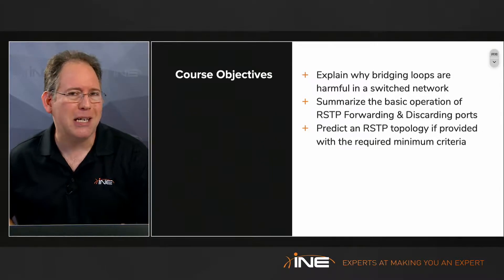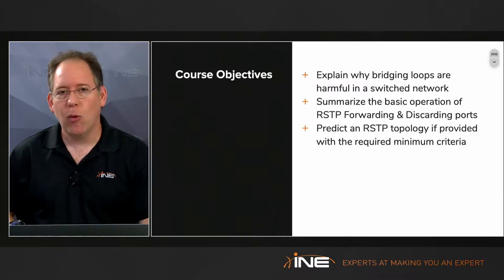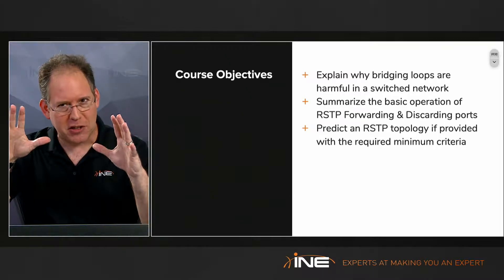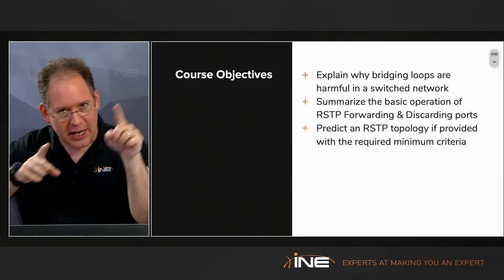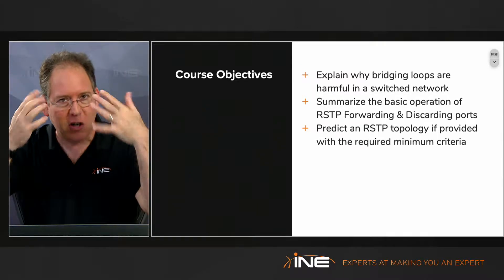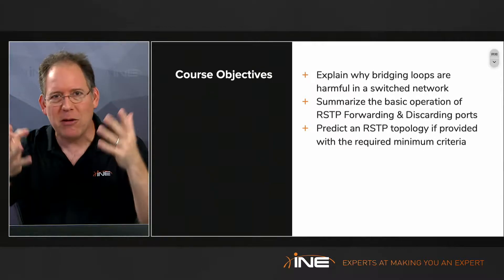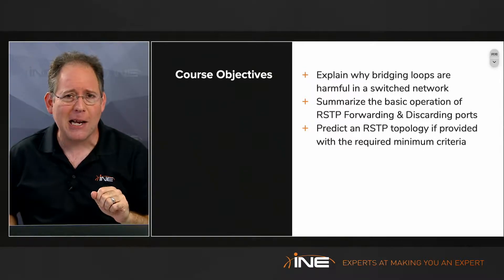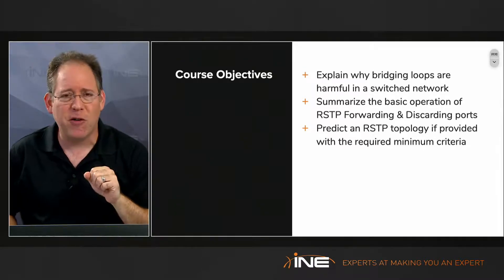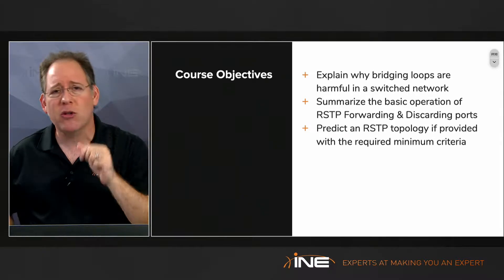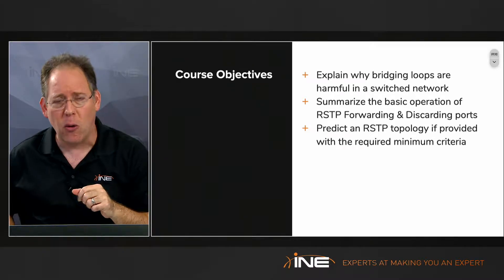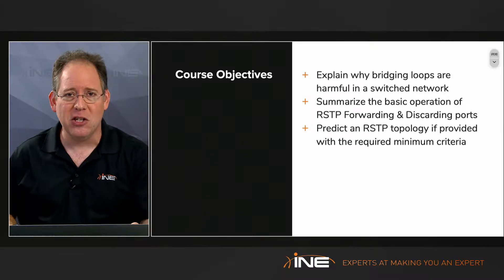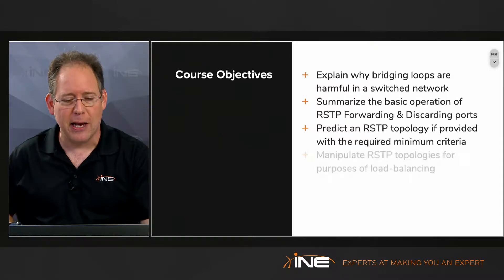I'm going to teach you how to predict a Rapid Spanning Tree topology. So if anybody ever gives you a topology of switches interconnected with links, various cost values and bandwidth values, you'll be able to look at them and say, that's going to be blocking, that's going to be forwarding — I can tell you exactly where traffic is going to go from point A to point B in that topology.